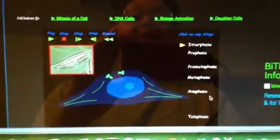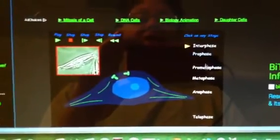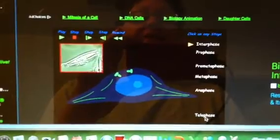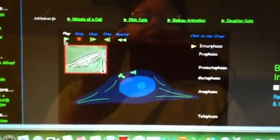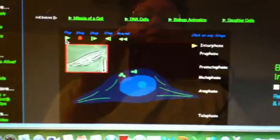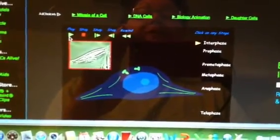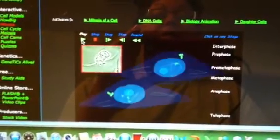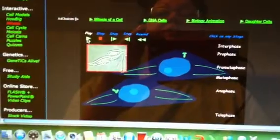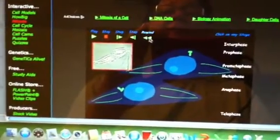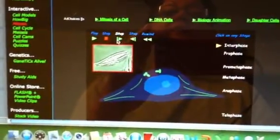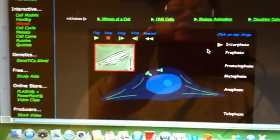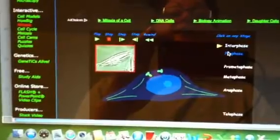You'll come into the website and these are the different phases right here, interphase through telophase. You can click on play and it will take you with a quick animation through all the different parts. There's your two new daughter cells. You can also rewind it right here and then you can go step by step if you just want to go slowly. You can just step it out by clicking on the stage over here.